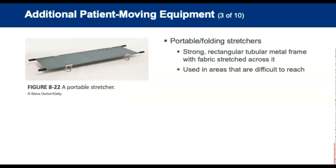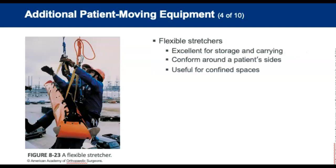Portable or folding stretchers have a long rectangular tubular frame with rigid fabric stretched across it. They are used in areas that are difficult to reach and weigh much less than wheeled stretchers. Flexible stretchers can be rolled up across the stretcher's width or length so that they become a smaller tubular package. They conform around the patient's sides and are useful when removing patients from or through a confined space.